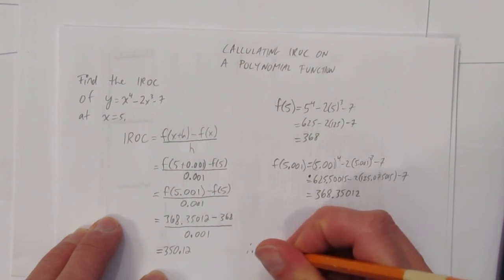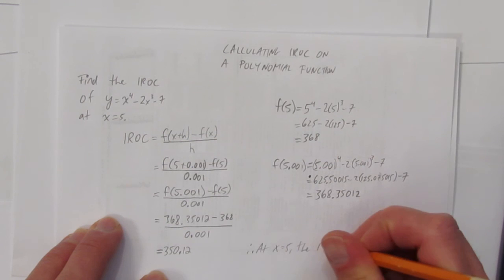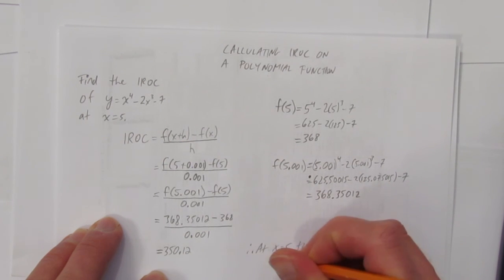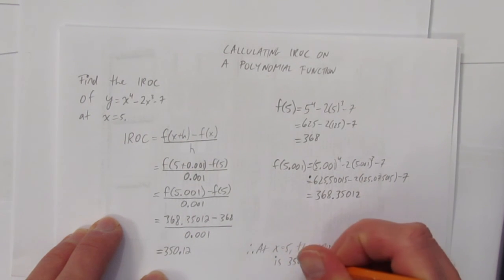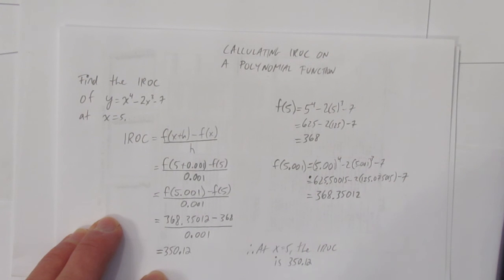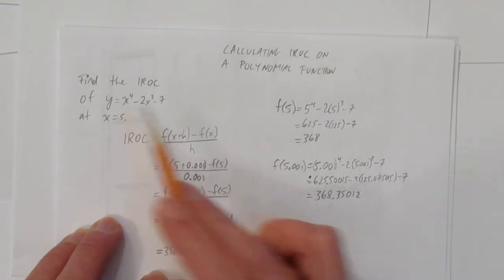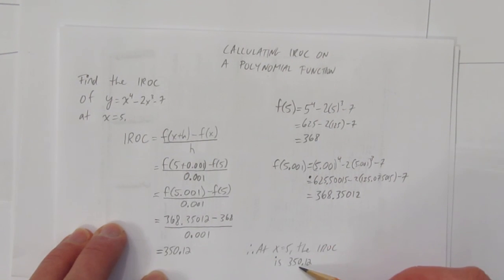Therefore, at x equals 5, the instantaneous rate of change is 350.12. That means that x equals 5, this function is very, very steep. It has a slope, or a rate of change, at x equals 5 of 350.12. And that's how you find the instantaneous rate of change on a polynomial function.